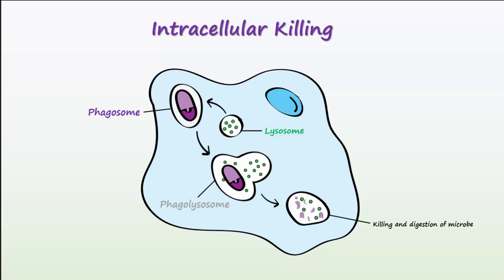The lysosome contains antibacterial molecules and enzymes that can kill and digest the microbe. Intracellular killing is accomplished through several mechanisms, including toxic reactive oxygen species such as hydrogen peroxide, and nitrogen-containing species like nitric oxide. Any indigestible material is then removed through exocytosis.